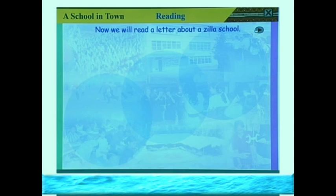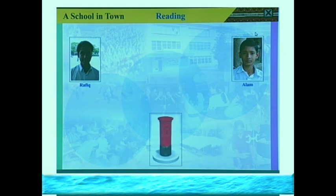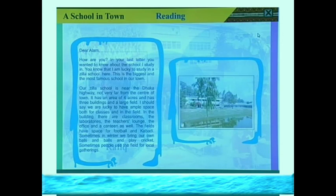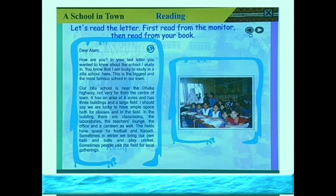Now we have to go through the text. There is a letter in your book. A student of SLA school, Rafik, wrote a letter to his friend Alam. Alam wanted to know about Rafik's school, so Rafik wrote that letter to Alam. Now we have to read the letter — remember, this is a letter written by Rafik to Alam. Let us go through the text.